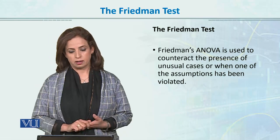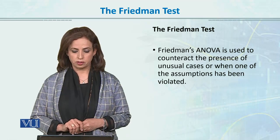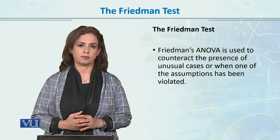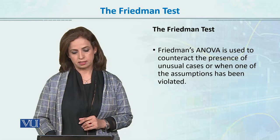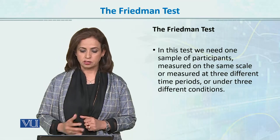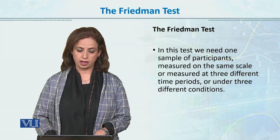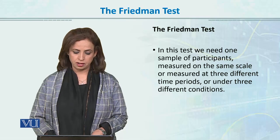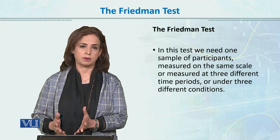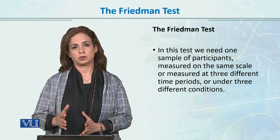The Friedman ANOVA is used to counteract the presence of unusual cases or when one of the ANOVA assumptions has been violated. When ANOVA assumptions are not met, our choice is the Friedman repeated measures test. In this test, we need one sample of participants measured on the same scale at three different time periods or under three different conditions.